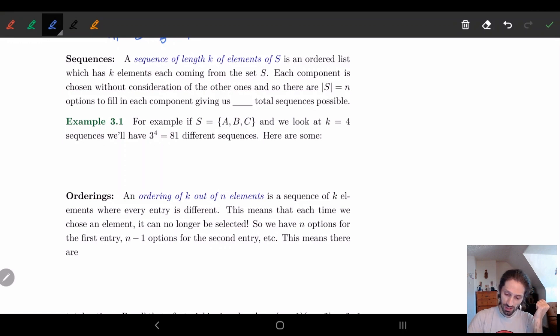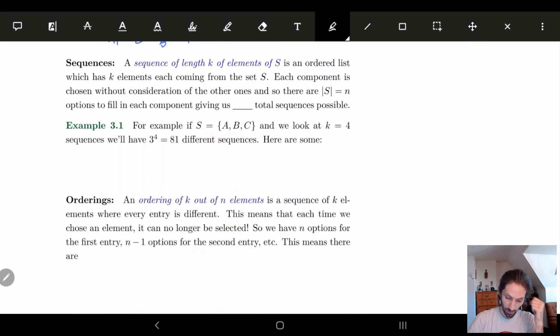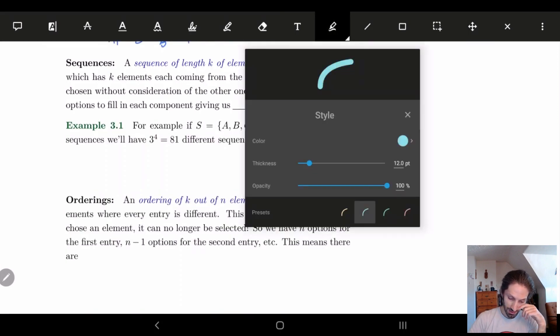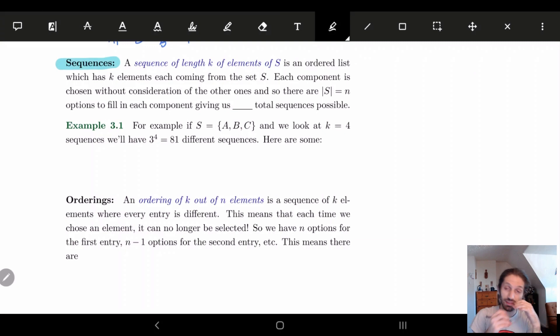So the first thing we're going to talk about is what's called a sequence. A sequence of length k of elements of S is going to be an ordered list which has k elements, each one of these elements coming from S. So we'll do this example and then we'll figure out how many of each thing we have.